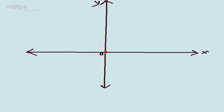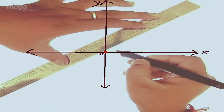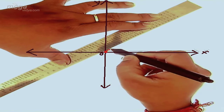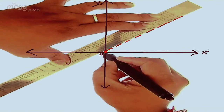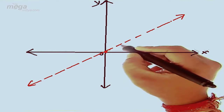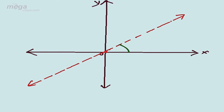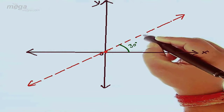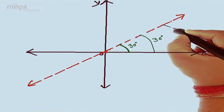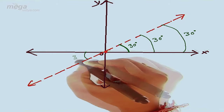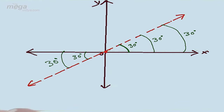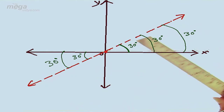From the origin, you move in a direction such that every time you make an angle of 30 degrees with the positive direction of the x-axis. You move forward and also in the backward direction, maintaining 30 degrees throughout. I'm taking 30 degrees only as an example — it is not necessary that it always be 30 degrees. Every time your movement makes an angle of 30 degrees, this path is called a straight line.